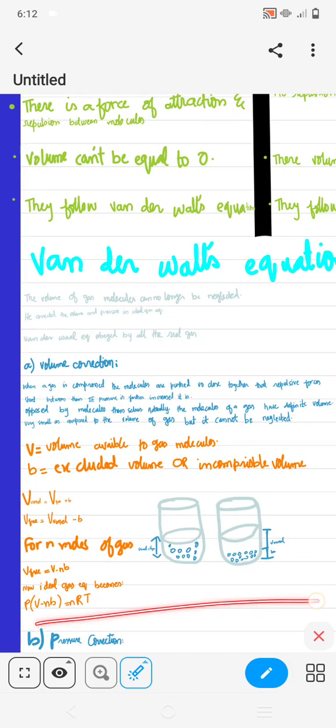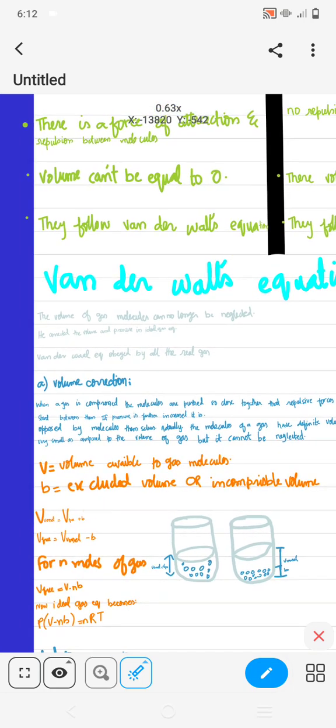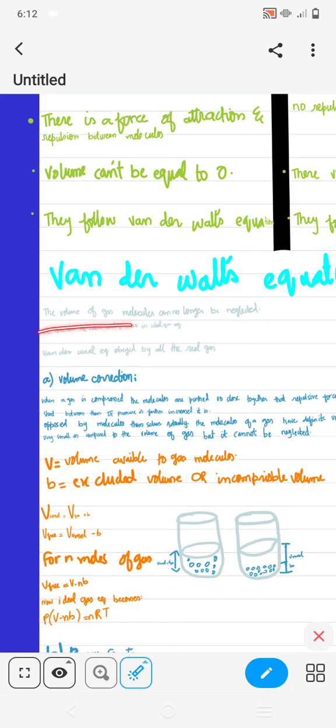The volume of the gas molecules cannot be neglected, can no longer be neglected. Van der Waals was a Dutch scientist that lived in the Netherlands. He stated that the volume of the gas molecule can no longer be neglected, although in ideal gas we can neglect.